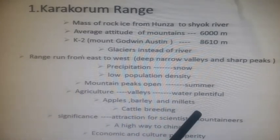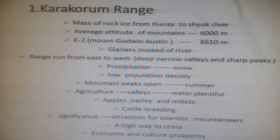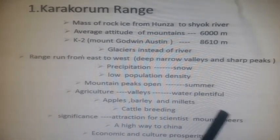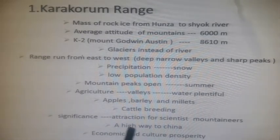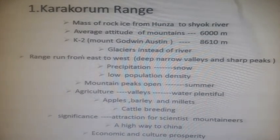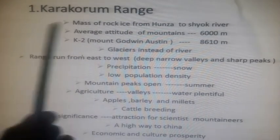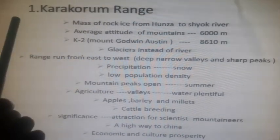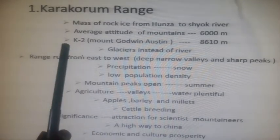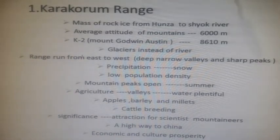Population density in the Karakoram range is low due to severe climatic conditions. Mountain peaks are only open during summers. Agriculture is practiced only in the valleys where water is plentiful, with crops like apples, barley, and millets. Cattle breeding is another occupation. The range is an attraction for scientists and mountaineers due to its challenging landscape, and it opens a highway to China via the Khunjerab Pass, which connects Pakistan to China.